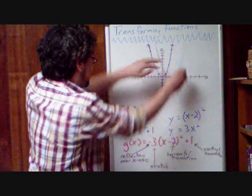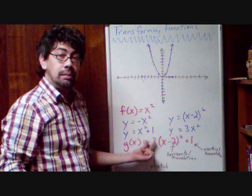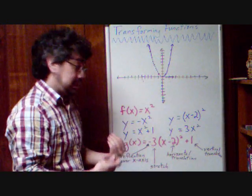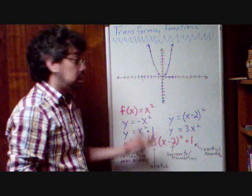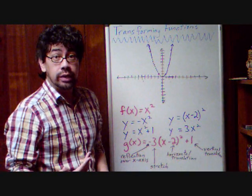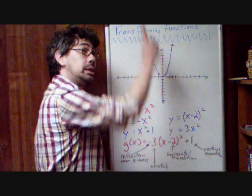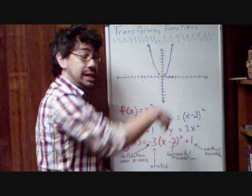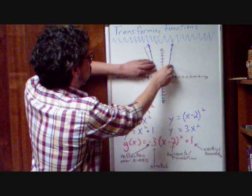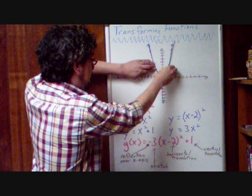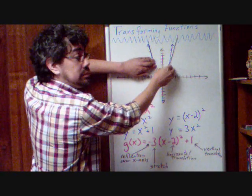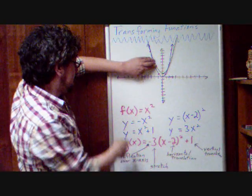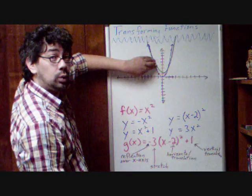And then that's the graph of y equals the quantity of x minus 2 squared. Now let's look down here, where we've got that number at the end, not inside. So we're adding one. When it's outside, we are going in the direction that the sign says. So this is positive. We're going in the positive direction up. If it was negative, we would go down the negative direction. So take my parabola and just move it up one space. Just one space. And that's my graph now for x squared plus 1.